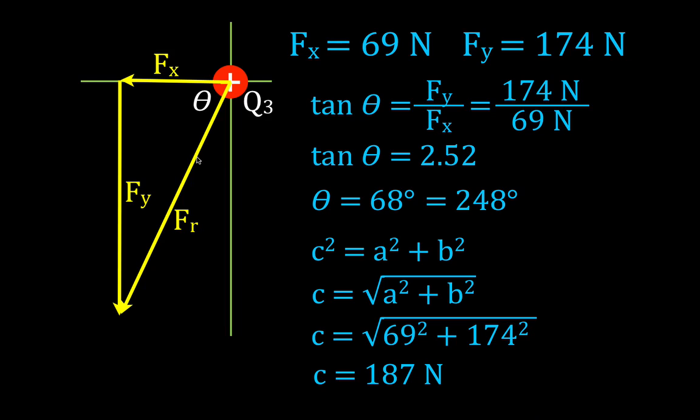And C turns out to be 187 newtons. So that means that the net force from those two charges that we started with, the magnitude of the force is 187 newtons. This vector is 187 newtons long. And it's at an angle of 68 degrees below the negative x-axis.